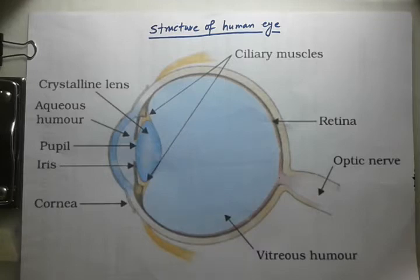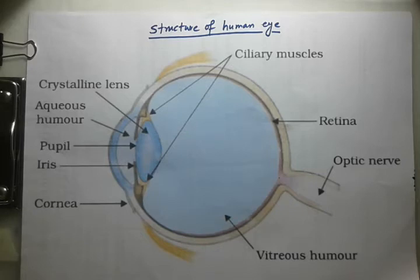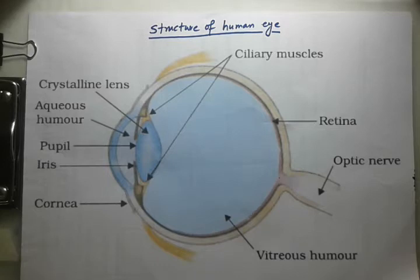Behind the cornea there is an opaque circular diaphragm called the iris. The color of the iris determines the color of the eyes of a person. The iris has a central hole known as the pupil. Due to its muscular action, the iris controls the size of the pupil.